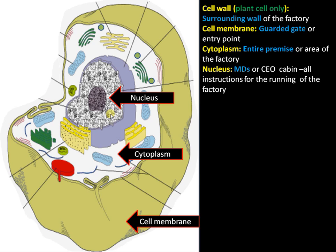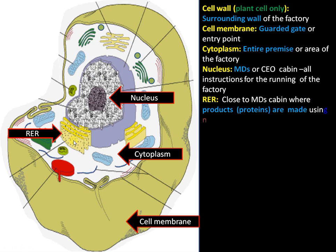All the instructions for making all proteins required by the cell are stored inside the nucleus, encoded as DNA. Close to the nucleus is the RER, or rough endoplasmic reticulum. It can be considered as a center near the CEO's cabin where products or proteins are made using nano machines called ribosomes. It is called rough because it is studded with ribosomes, which are protein-synthesizing machines.